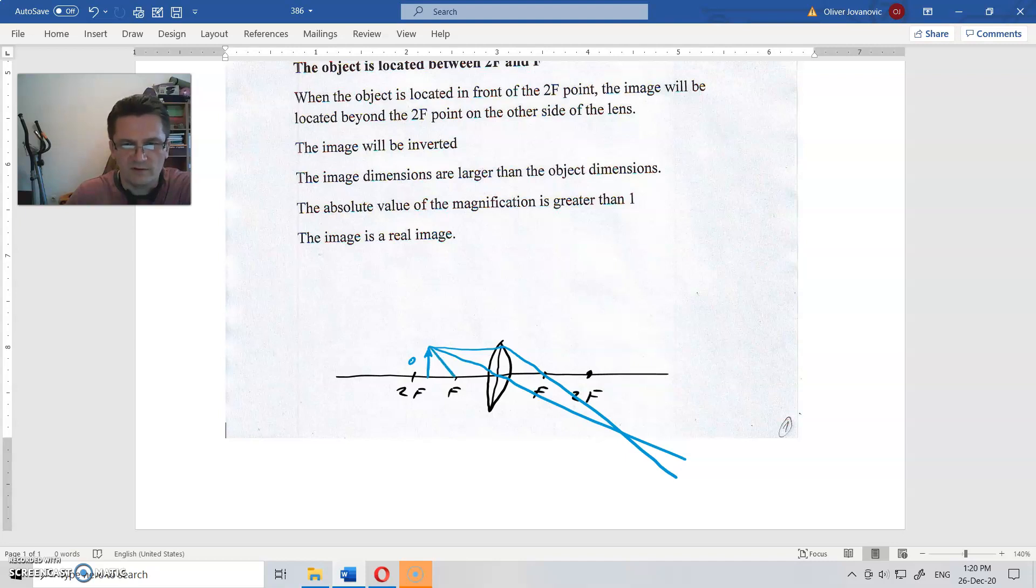And then it will go parallel to the optical axis. Now all three rays should go to one point, but it is difficult to draw in the frame and you do not need three rays, two is enough.